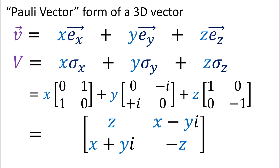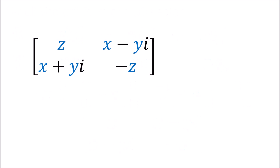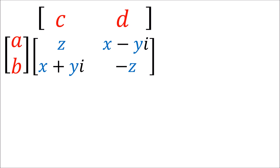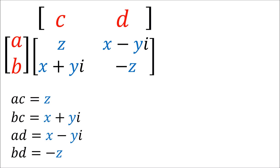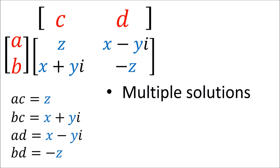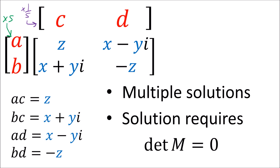Now, if we bring back our polyvector, let's try factoring it into a row and a column — that is, solving for A, B, C, D. This gives us 4 equations. Remember that there will be multiple solutions because we can always multiply the column by a nonzero number S if we multiply the row by 1/S. Also, in order for solutions to exist, the determinant of this matrix must be 0.